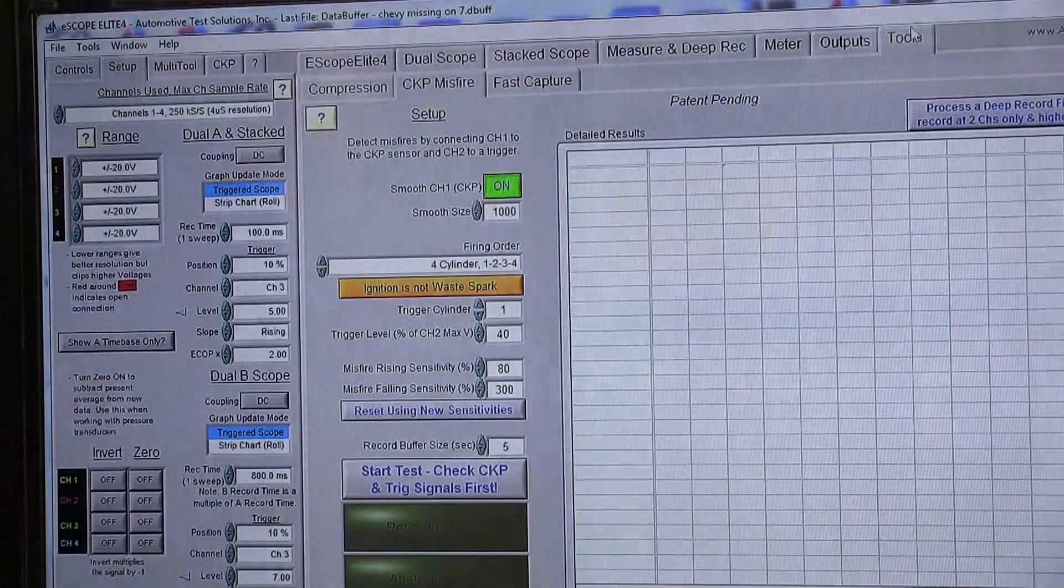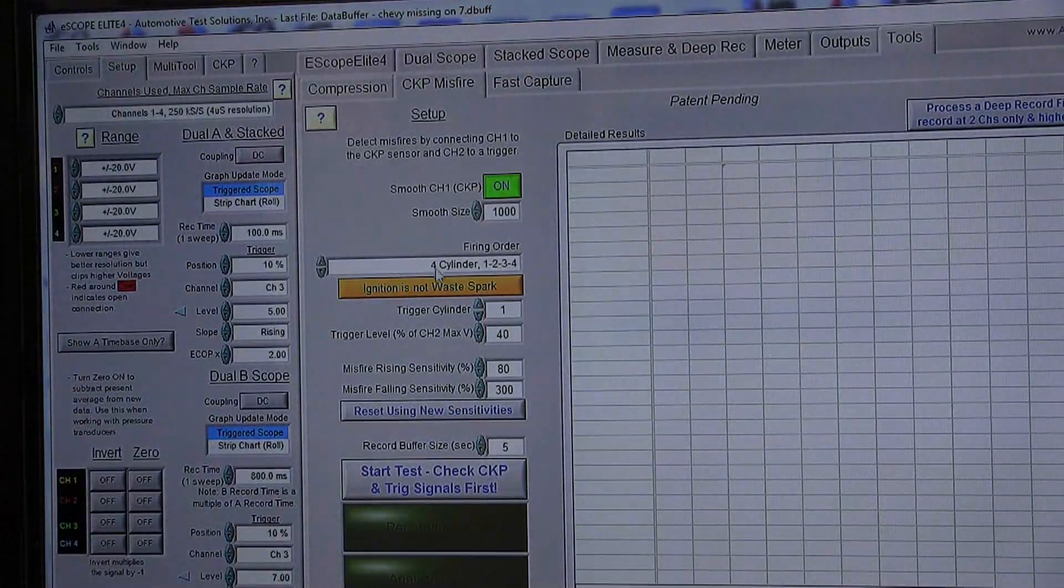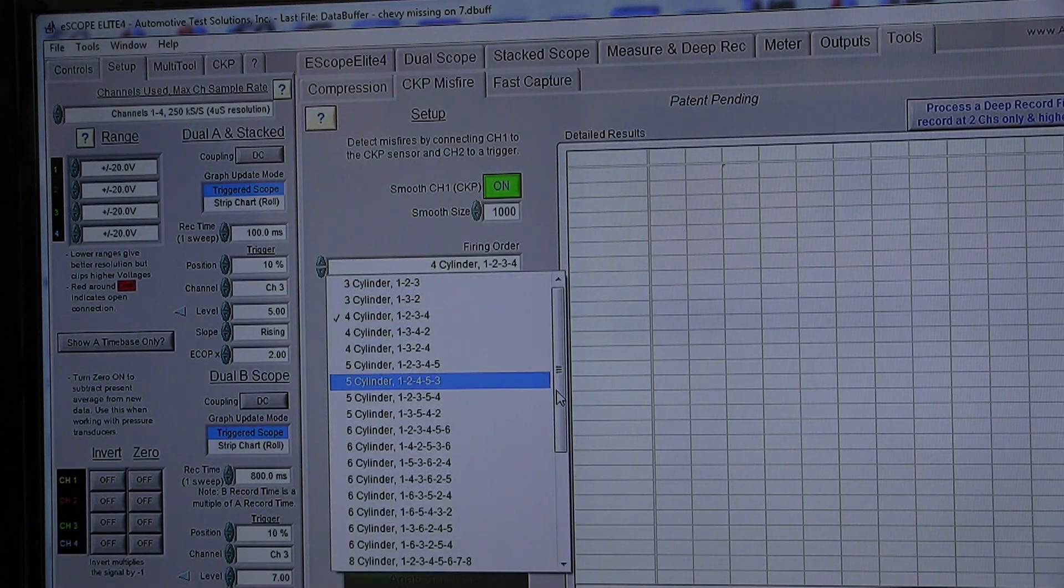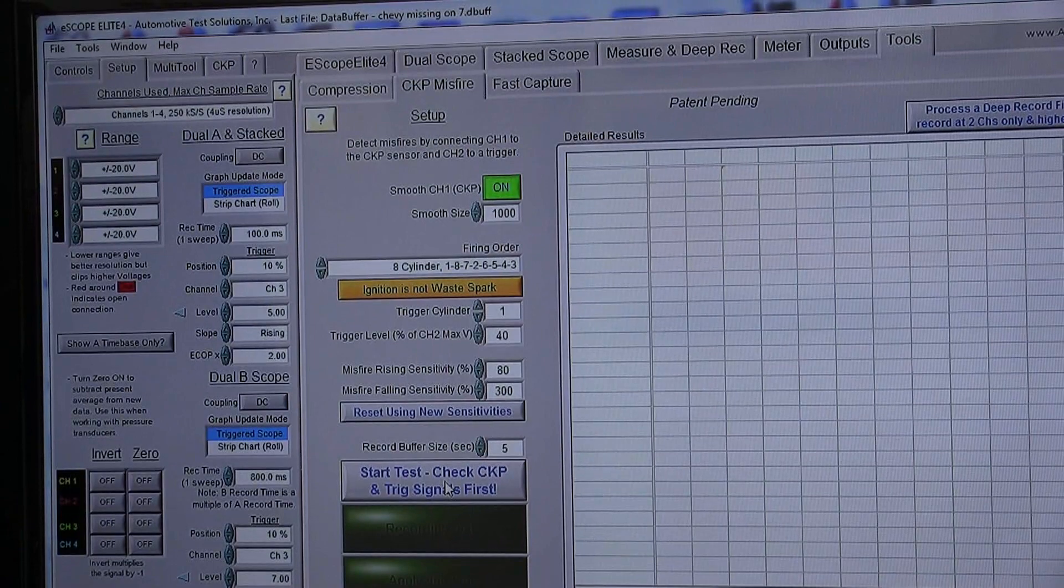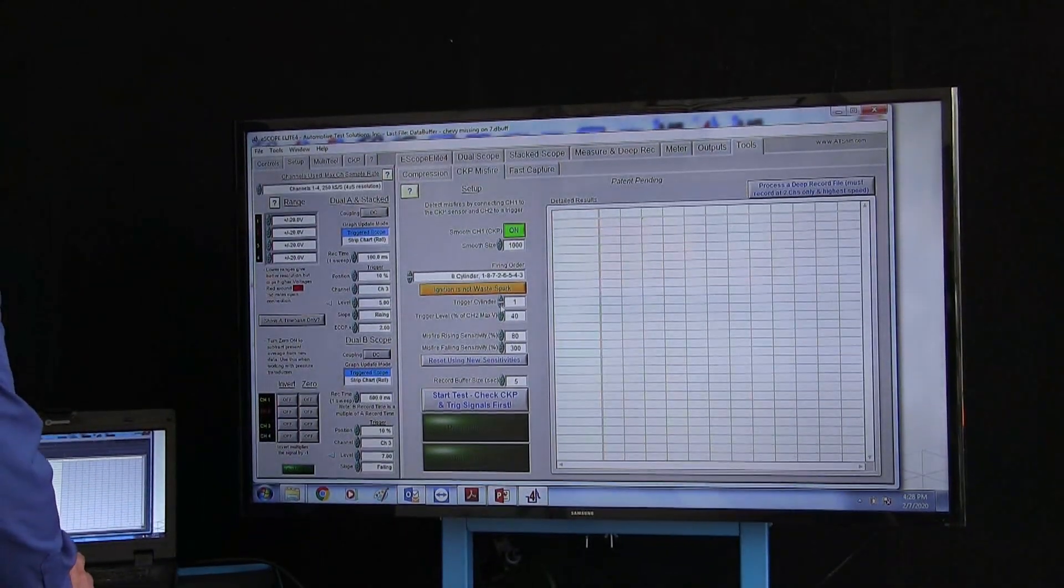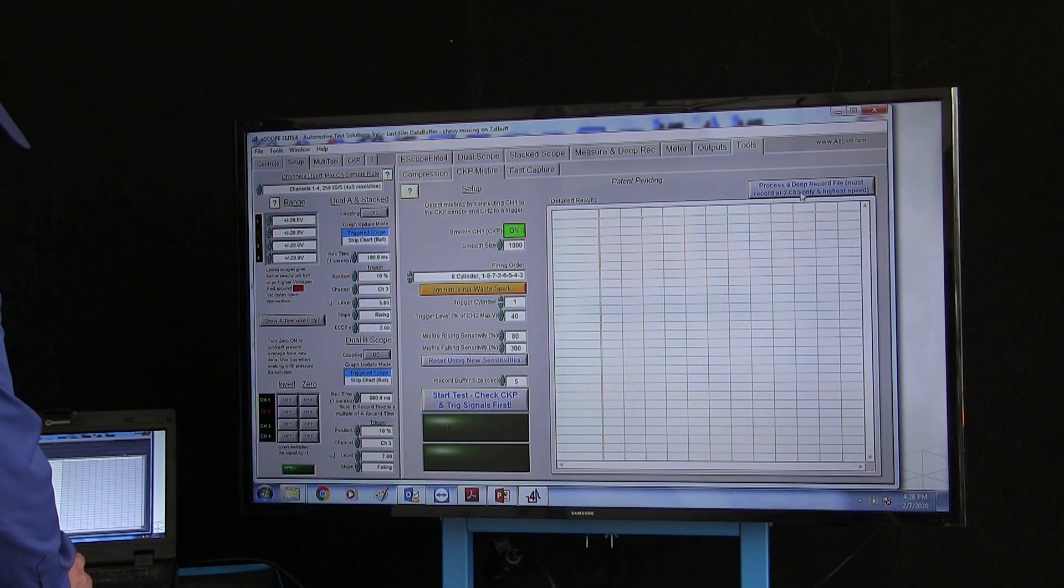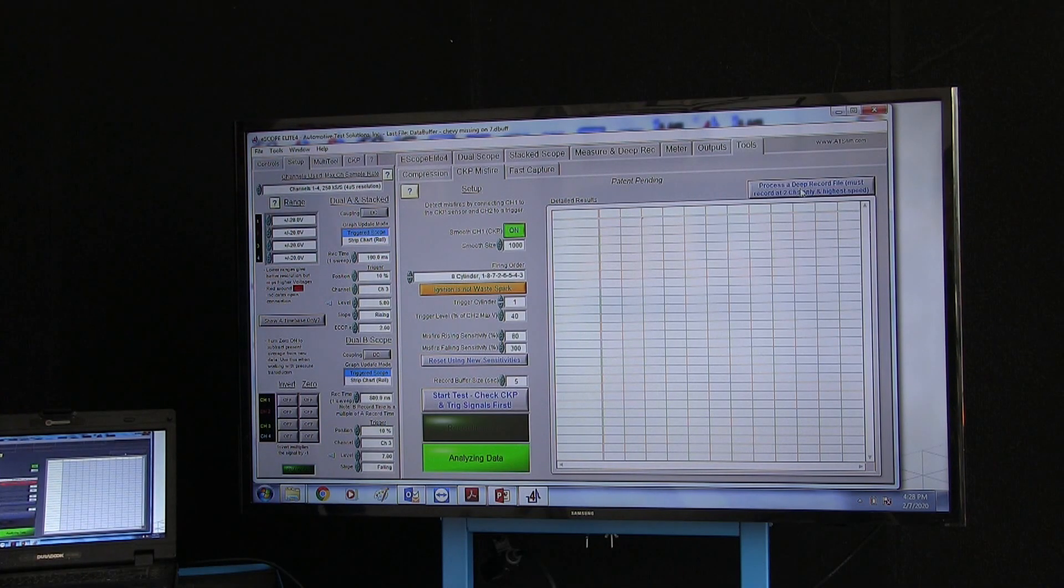The first thing we want to go is to the tool tab. Once we're in the tool tab we need to pick the firing order for the car. In this case our firing order is one eight seven two six five four three. We're on cylinder number one and now we're just going to process that data and let the machine tell us what cylinder is missing.